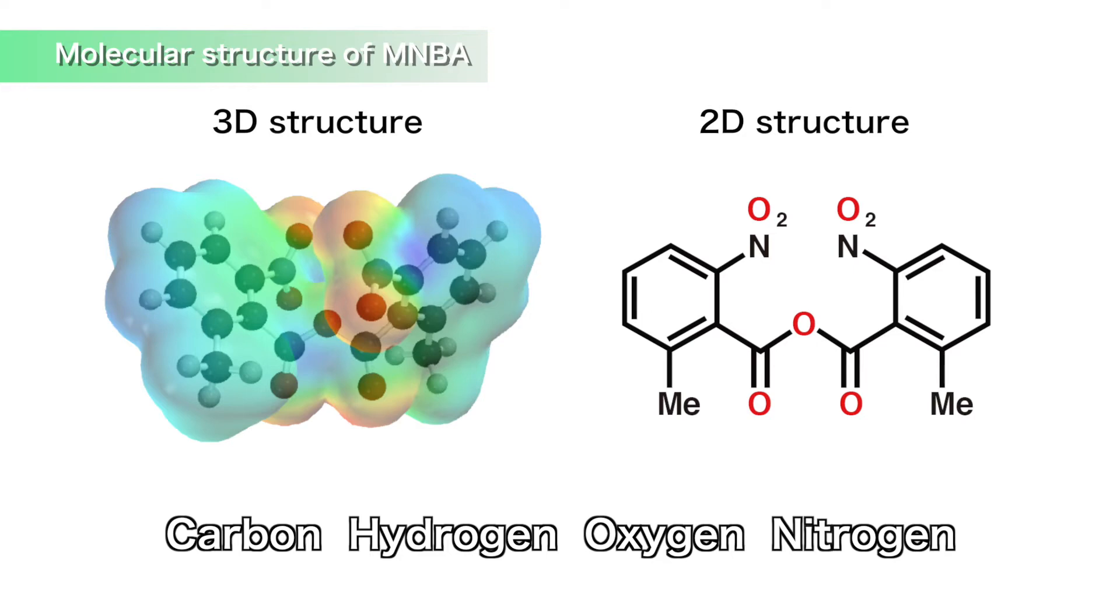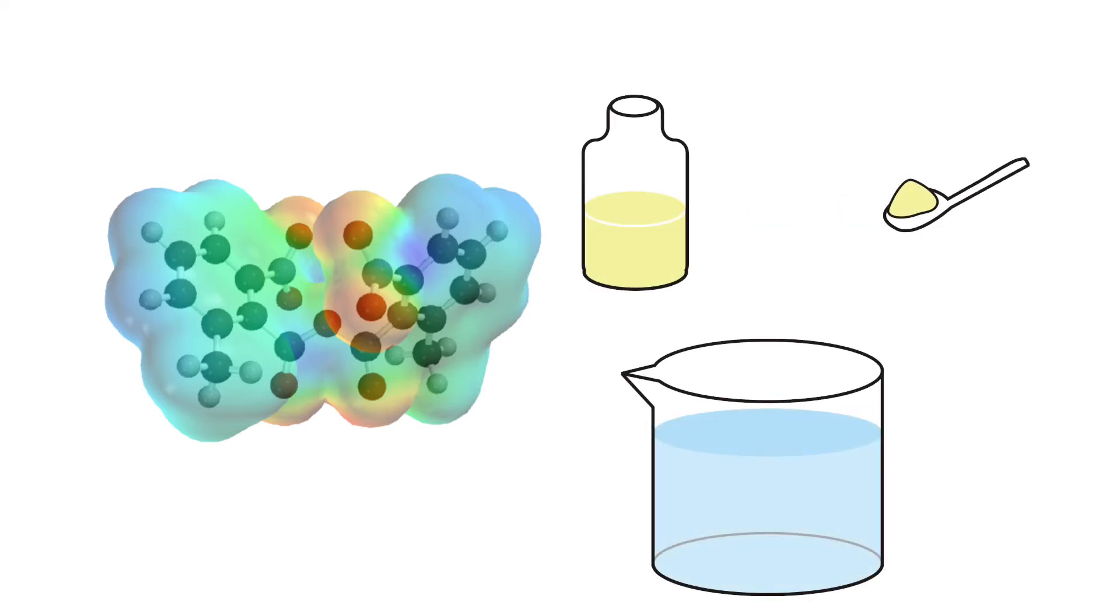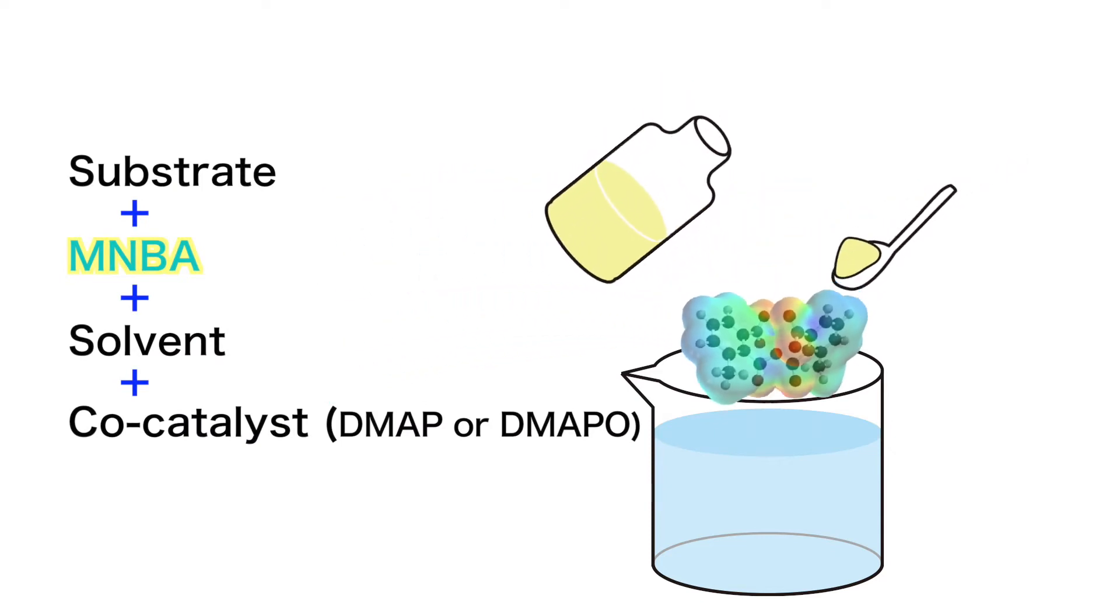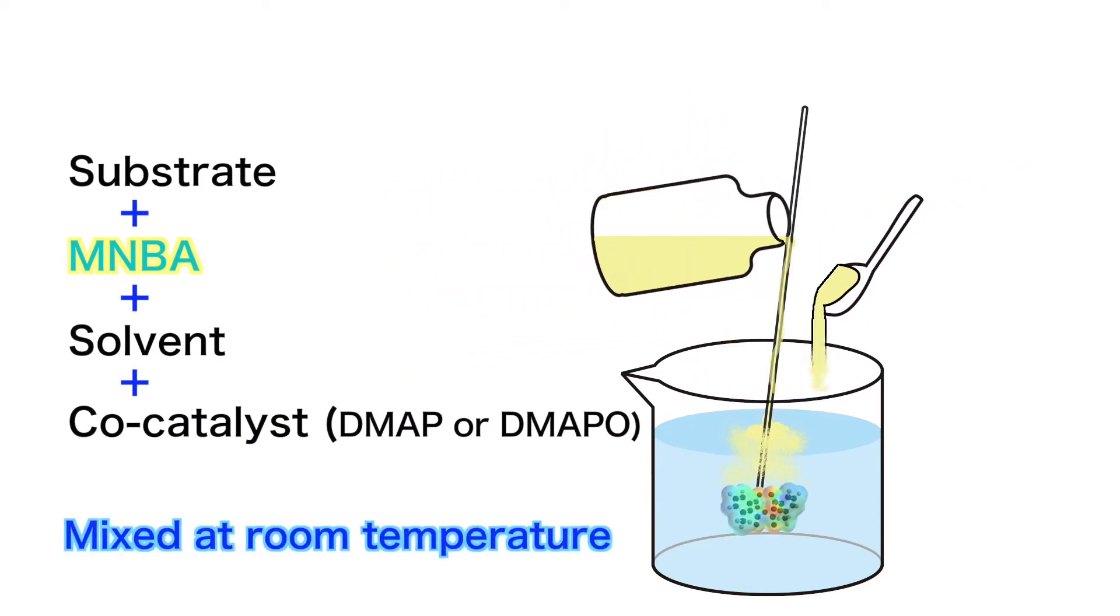MNBA works like a magical powder. By simply mixing it with the materials, various compounds can be made quickly, simply and safely.